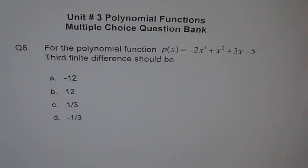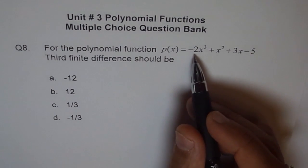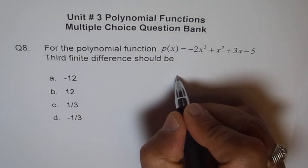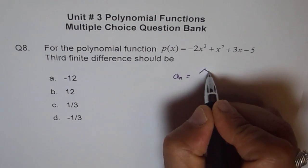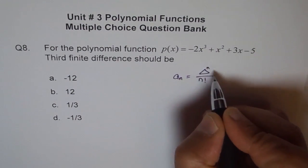Well, some of you may get it, some of you may not get it since you don't know this concept. Now here, you will find that there is a relation between finite difference and the leading coefficient. The relation is that the leading coefficient an is equal to finite difference divided by n factorial, nth finite difference.